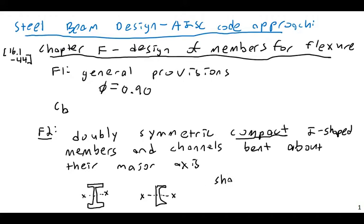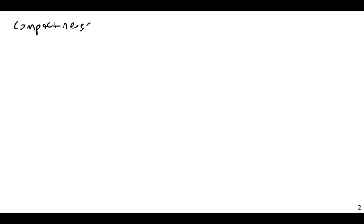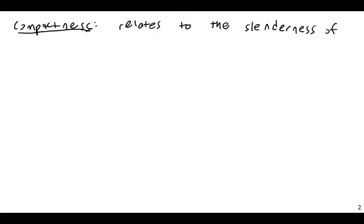In terms of shapes, this is going to mainly apply to hot-rolled shapes — generally hot-rolled W-sections, C-channels, etc. When the code says 'compactness,' it refers to a geometric measure of slenderness for a particular element of a cross-section. You can have compactness of a web or compactness of a flange — it relates to the slenderness of those elements.